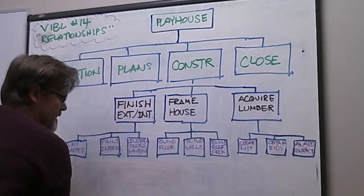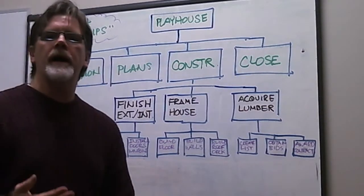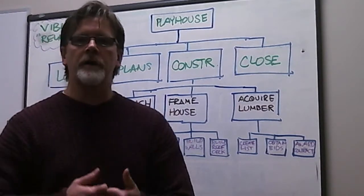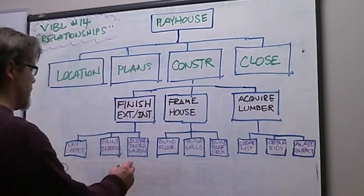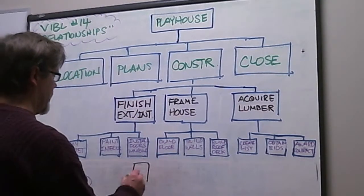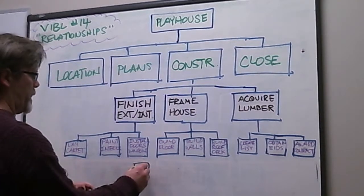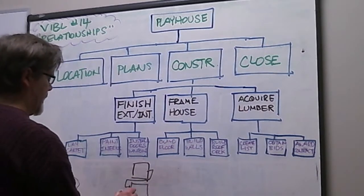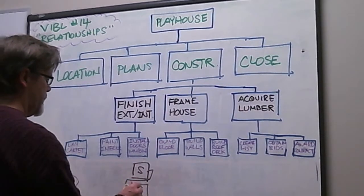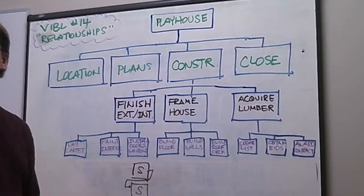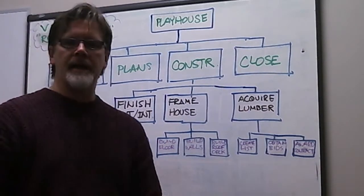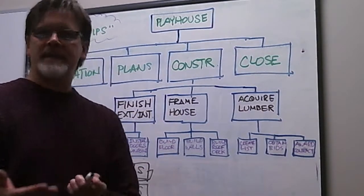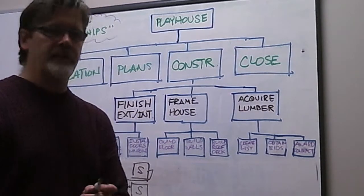So what is a soft logic relationship? One of the soft logic relationships used often is what we call a start-to-start relationship, and it would look something like this: we start an activity, and as this activity starts, we start a second activity at the same time. So it is a start-to-start relationship — a concurrent action of activities where once one activity starts, the other activity starts as well.